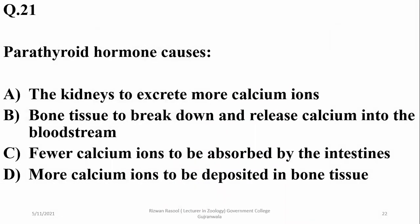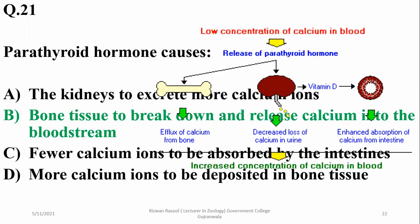Parathyroid hormone causes bone tissue to break down and release calcium into the bloodstream. It acts on the bones for reflux of calcium, on the kidneys for decreased loss of calcium, and on the gut for enhanced absorption of calcium ions, so that blood calcium level could be increased.